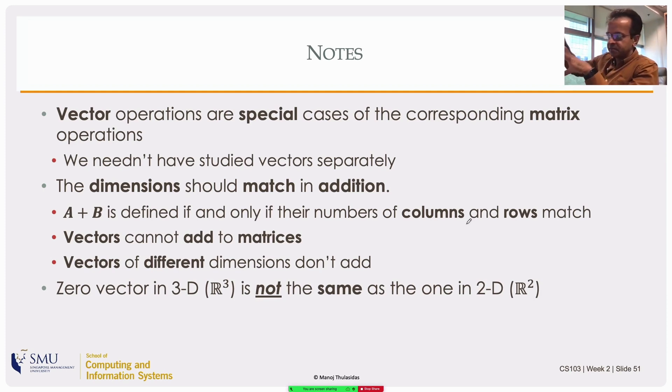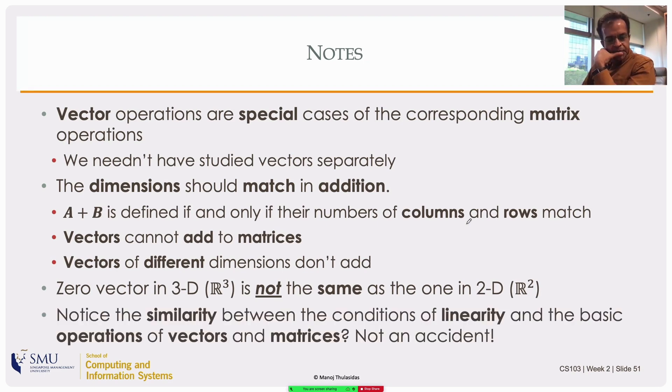A zero vector in three dimensions, R^3, is [0, 0, 0]. It's not the same as a zero vector in R^2. They live in different universes, parallel universes. They might talk to each other but they don't add or scale with each other.